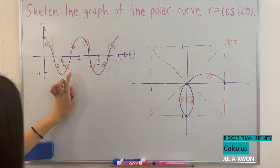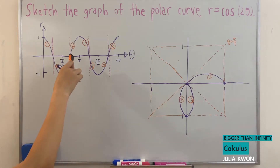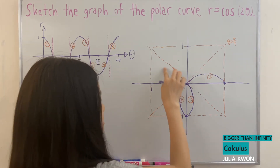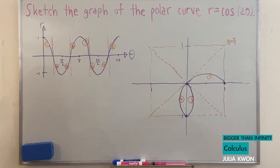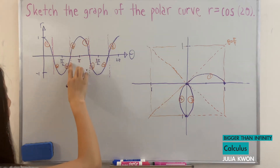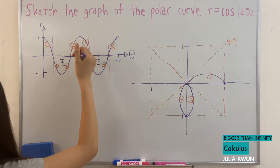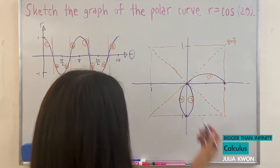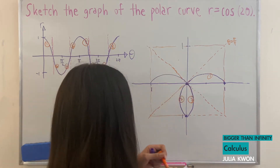For the fourth curve, theta is equal to three pi over four to pi. We'd be talking about this part of the second quadrant. As theta gets closer to pi, the radius gets larger and approaches one. So the fourth curve looks like this.